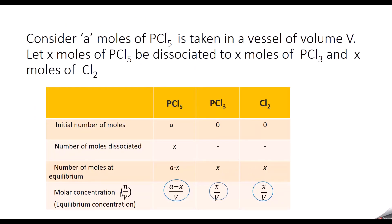Molar concentration is nothing but number of moles divided by volume, which gives the equilibrium concentration. At equilibrium, the concentration of PCl5 is (A minus X) divided by volume B. For PCl3, it is X divided by B. For Cl2, it is X divided by B.